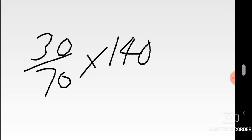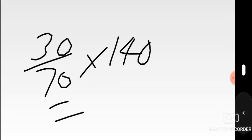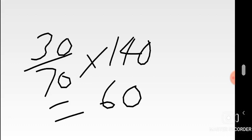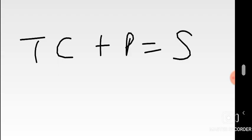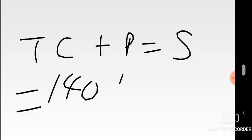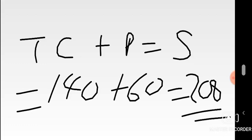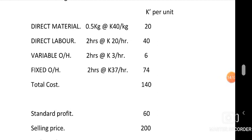So it's 30/70 times the total cost of 140, which gives a profit of 60. That's your standard profit to put in the cost card. Then the new selling price is total cost plus profit: 140 plus 60 equals 200. That's the selling price. And that's how the entire standard cost card is prepared — as you can now see on the screen. That's it.